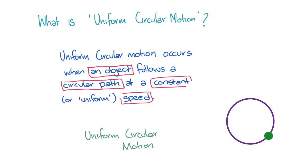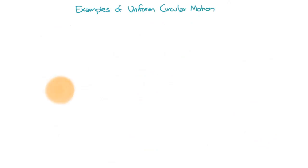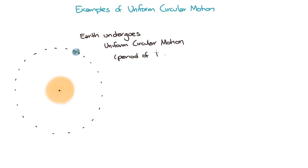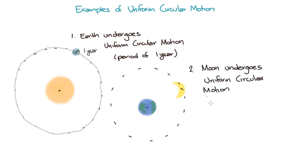There are lots of examples of objects that undergo uniform circular motion, or something very close to it. One example that might come to mind is the Earth, which orbits the Sun. One revolution around the Sun takes one year, or about 365 days. Another example is the Moon, which orbits the Earth and takes about one month to complete one orbit.